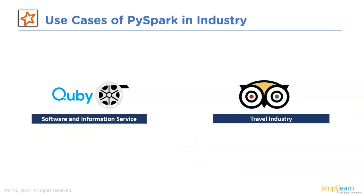Last but not least, PySpark is used in the travel industry as well. Apache Spark usage in the travel sector is growing quickly. It facilitates seamless travel planning by providing customized recommendations. By comparing numerous websites, it can also advise tourists on where to book hotels. Spark is being used by TripAdvisor, a popular travel website, to speed up its tailored client suggestions to help consumers create the ideal trip.